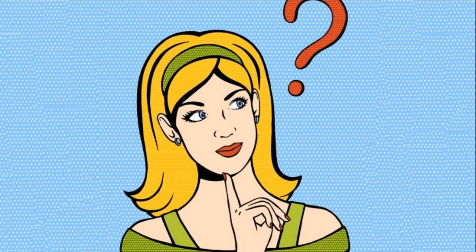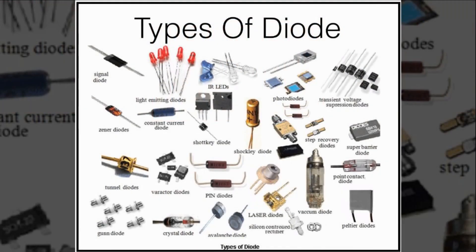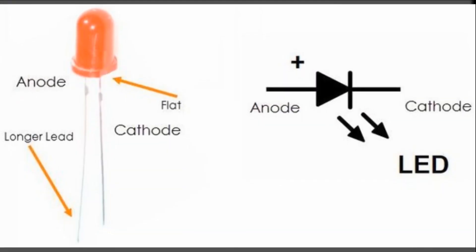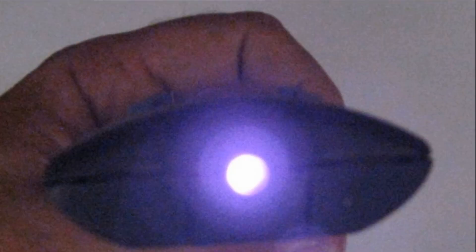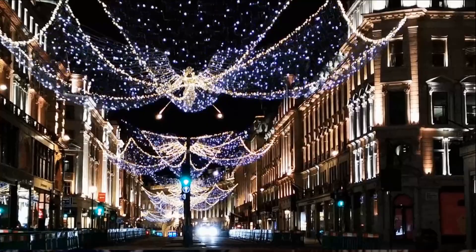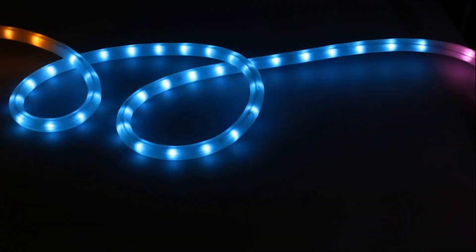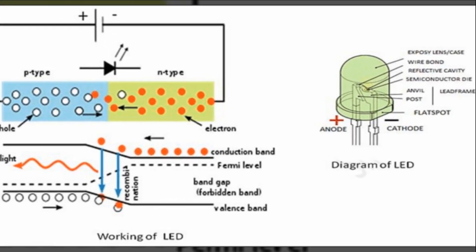You might be curious — are all diodes the same? The answer is no. There are various types of diodes, each with their unique characteristics and functions. First up, we have light-emitting diodes, more commonly known as LEDs. Imagine the tiny lights that blink on your TV remote or the colorful lights on your holiday decorations — those are LEDs. They are diodes that emit light when an electric current passes through them.